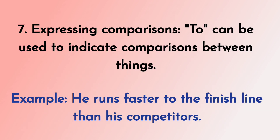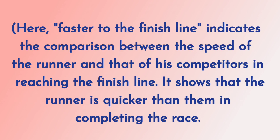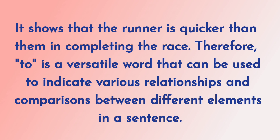7. Expressing comparisons. 'To' can be used to indicate comparisons between things. Example: He runs faster to the finish line than his competitors. Here, 'faster to the finish line' indicates the comparison between the speed of the runner and that of his competitors in reaching the finish line. It shows that the runner is quicker than them in completing the race. Therefore, 'to' is a versatile word that can be used to indicate various relationships and comparisons between different elements in a sentence.